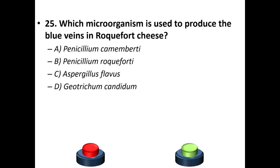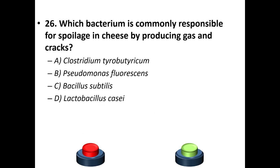Twenty-fifth question: which microorganism is used to produce the blue veins in Roquefort cheese? A: Penicillium camemberti. B: Penicillium roqueforti. C: Aspergillus flavus. D: Geotrichum candidum. Your answer is B — Penicillium roqueforti.